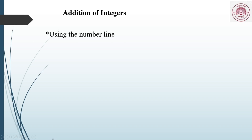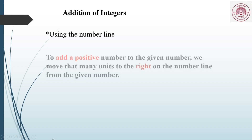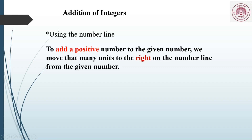To add a positive number to a given number, we move that many units to the right on the number line from the given number. Let's understand this using an example.